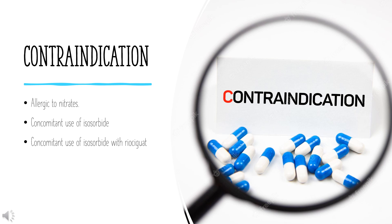Contraindication: Isosorbide dinitrate is contraindicated for patients known to be allergic to nitrates, with concomitant use of isosorbide with PDE inhibitors such as sildenafil and tadalafil, and with concomitant use of isosorbide with riociguat, a soluble guanylate cyclase stimulator used for the treatment of pulmonary arterial hypertension and chronic thromboembolic pulmonary hypertension.